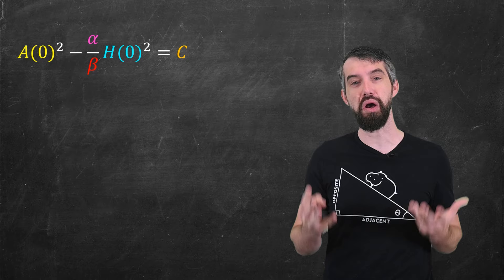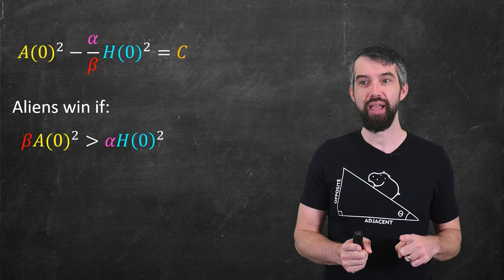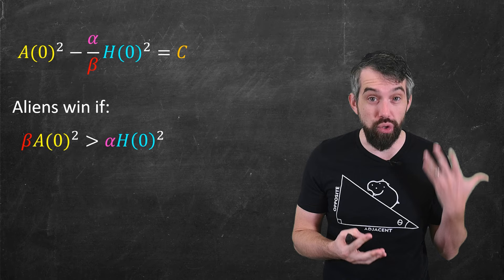And since our main condition of who was going to win was whether C was greater than zero or C was less than zero, this all turns out to be equivalent to saying that aliens are going to win if beta times the initial population of aliens squared is bigger than alpha times the initial population of humans squared.